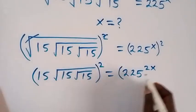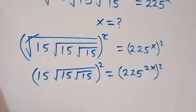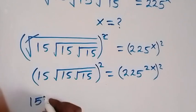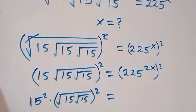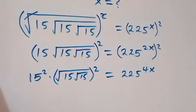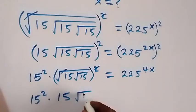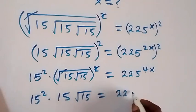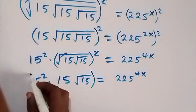Next step, we can also take the square on both sides again. This square will affect 15 and this square root. Here we have 15 squared multiplied by square root of 15, then root 15 is also squared, which gives us 225 raised to power 4x. This square cancels this square root, leaving us 225 raised to power 4x.